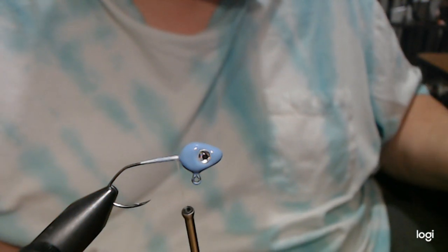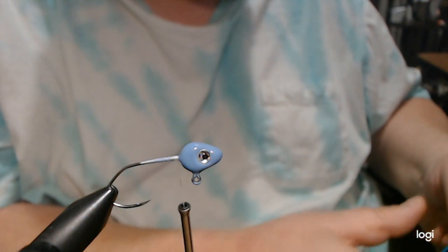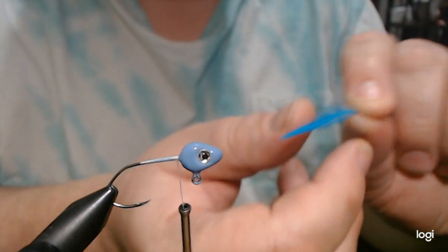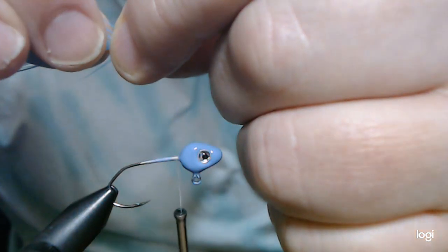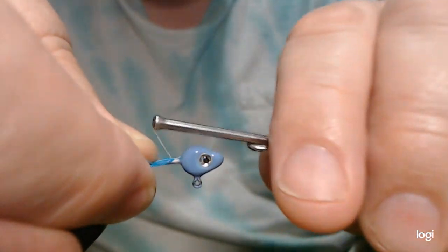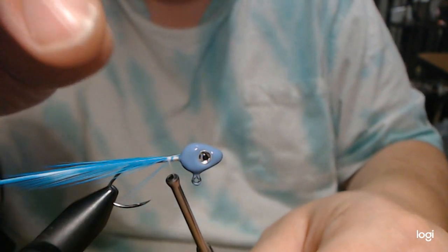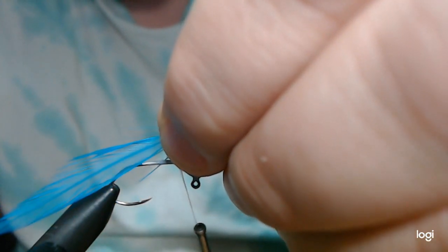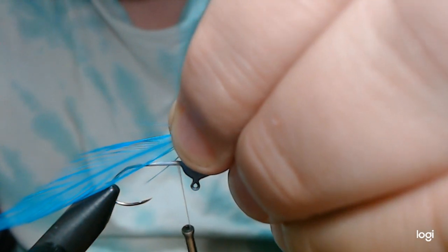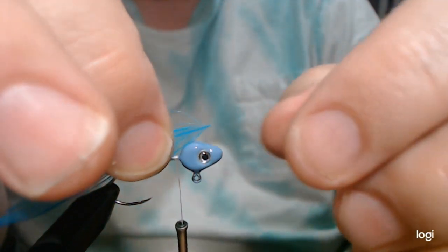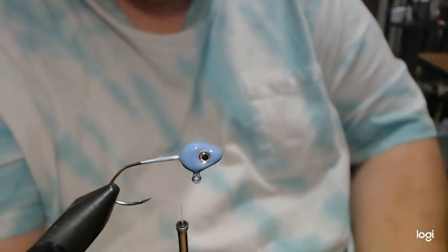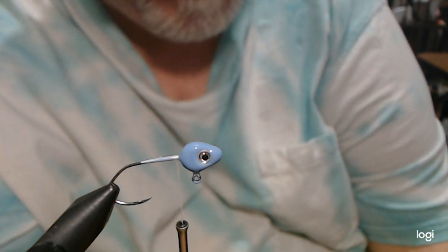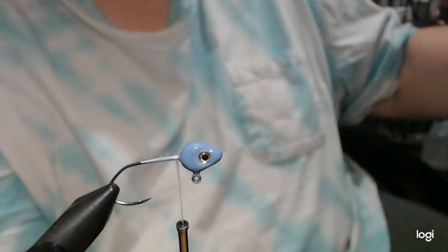The first thing we're going to do is add our tail material, which is going to be saddle hackle. It's a color called silver doctor blue. I really like this blue, it's almost like a kingfisher or a fluorescent blue. I just take the tip section, I already cut it to length. You want this about an inch, anywhere from like an inch and a quarter to an inch and three quarters, depending on your preference and the preference of the fish in your area.